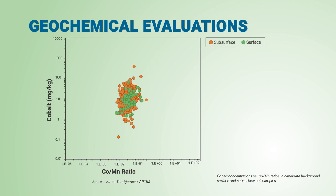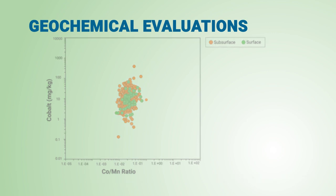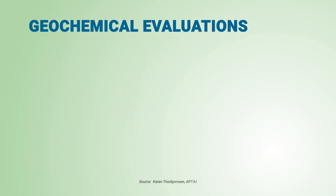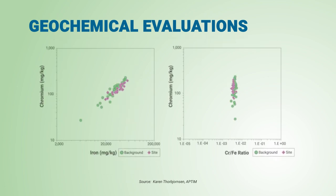If other elements also exhibit similarity in elemental ratios regardless of depth, then that suggests there's no need to keep the surface and subsurface soil data separate all of the time. For this facility, after evaluating other elements in soil, the project team decided that it was appropriate to combine the surface and subsurface soil background data sets in addition to having separate data sets. Summary and inferential statistics were then calculated for the three background data sets. Let's look at a few more examples of other trace element evaluations, also using real-world soil data sets.